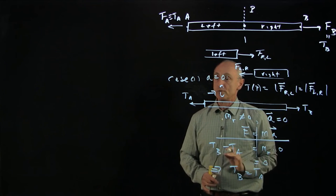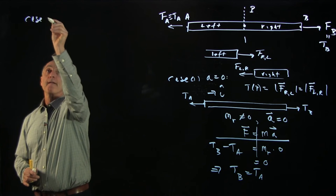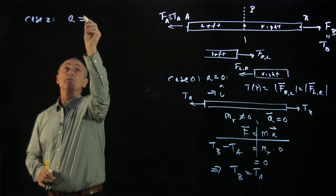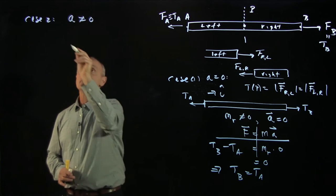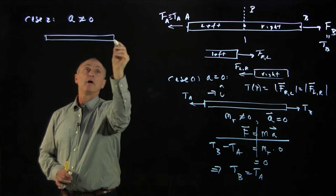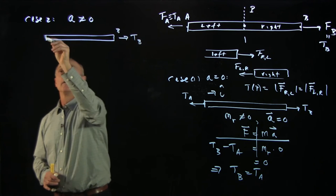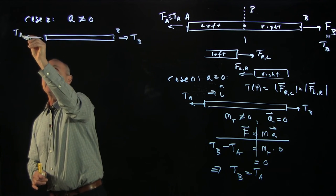Tension in the rope is uniform. Now let's suppose case 2, that A is not 0. And so now we have the rope. This is point B. Here's point A.